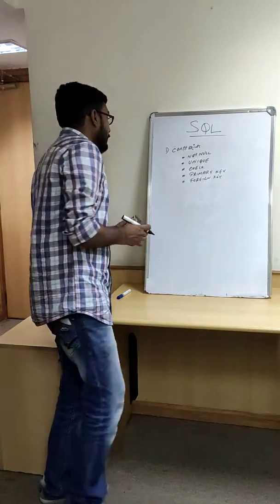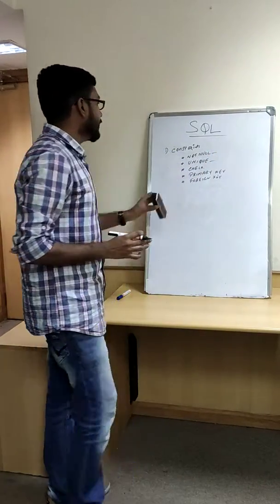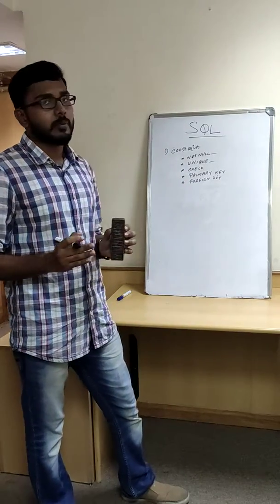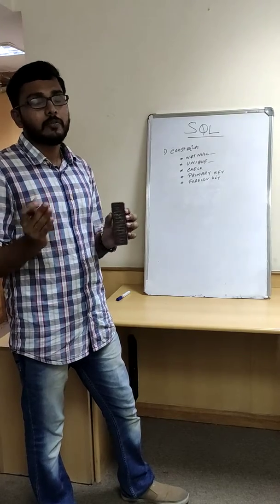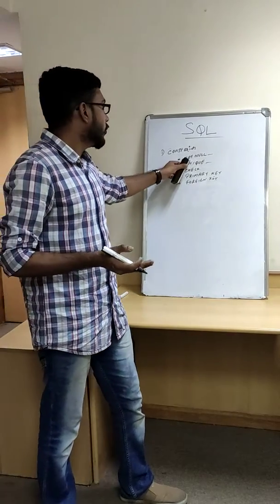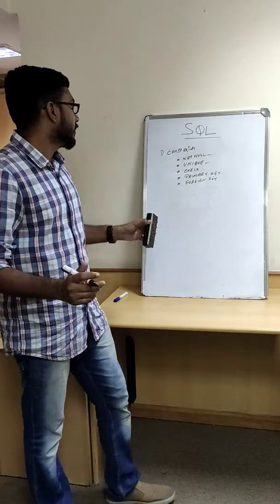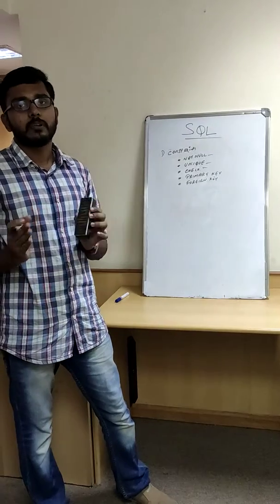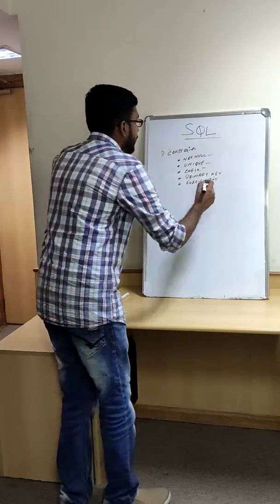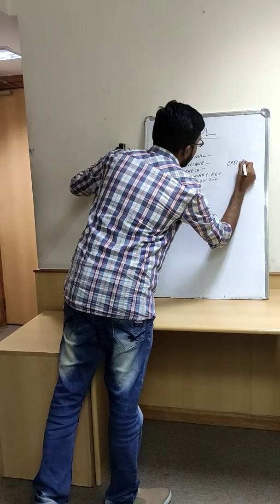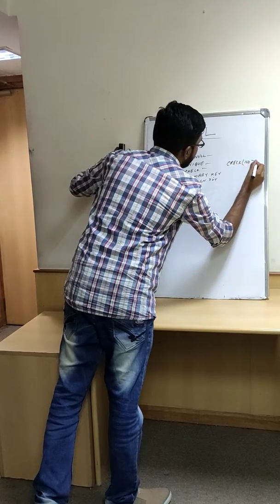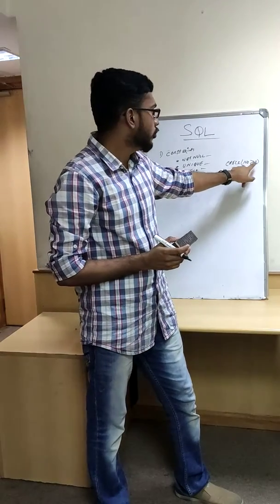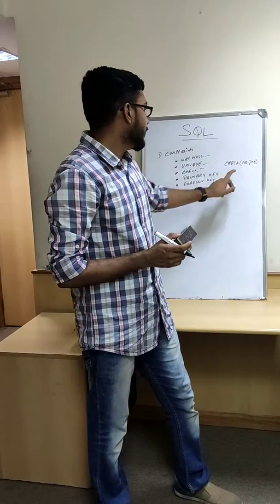Another one is unique. This constraint will deal with unique elements. If any kind of duplicate elements are present, it will not allow the entry of the duplicate elements. And check constraint can be used to check some particular conditions.